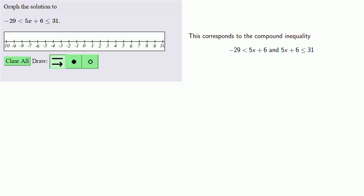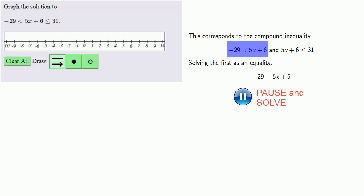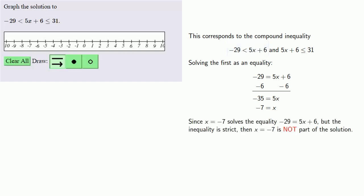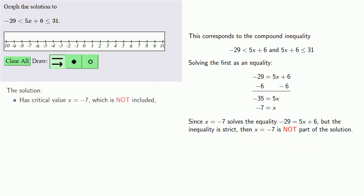We'll solve the first inequality as an equality. While we solve the equality like a good math student or a good human being, we acknowledge the existence of the inequality. Since x equals minus 7 solves the equality minus 29 equals 5x plus 6, but the inequality is strict, x equals minus 7 is not part of the solution. Our solution has a critical value at x equals minus 7, which is not included.